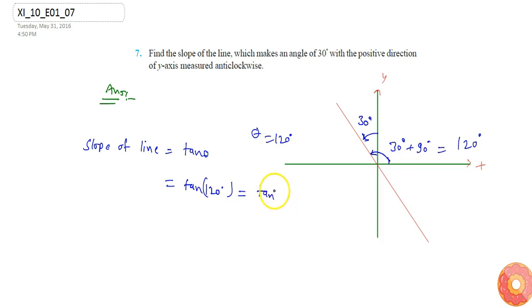Or it is minus tan(60°). So tan(60°) has the value root 3, so slope will be minus root 3. So this will be our final answer.